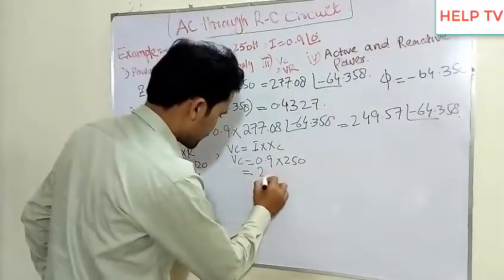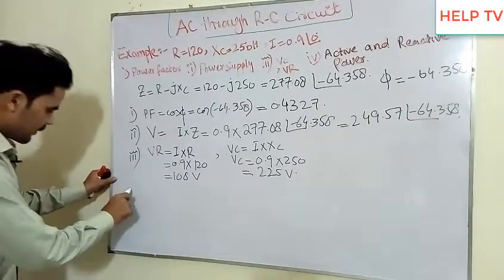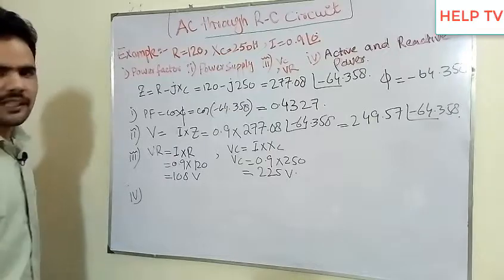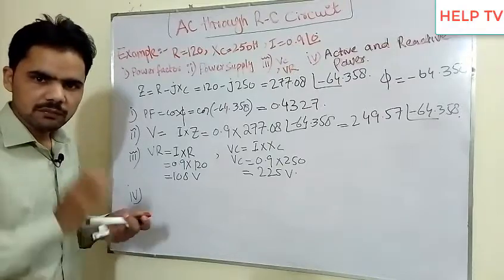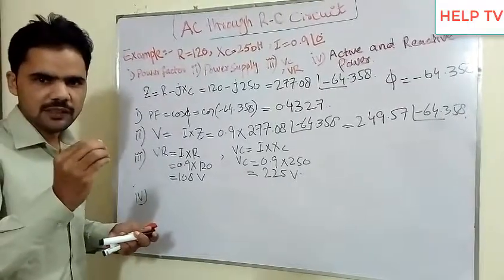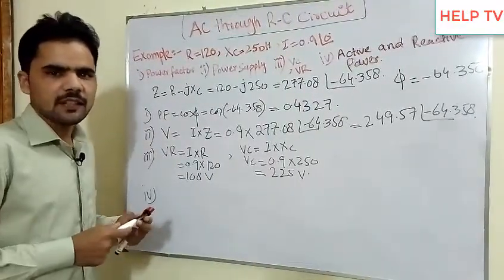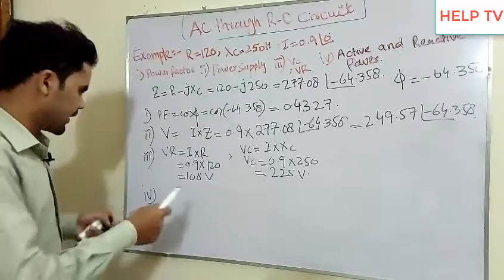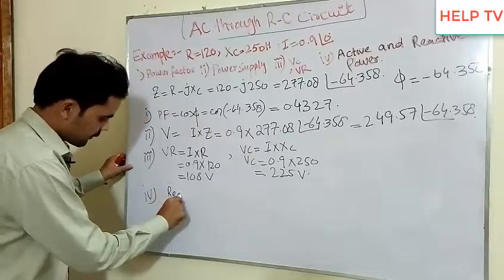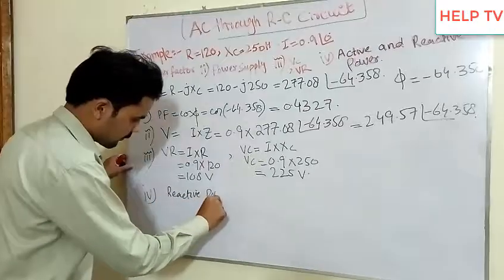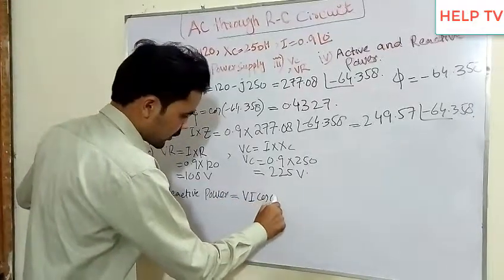The fourth part is finding active and reactive power. Active power is the useful power that comes, and reactive power is the power which is wasted. Now we calculate the active power.